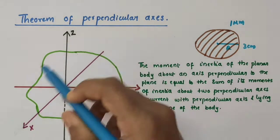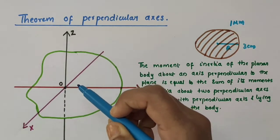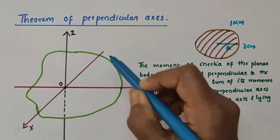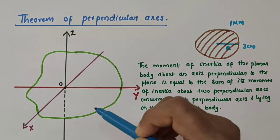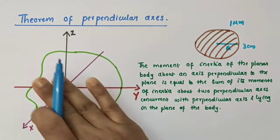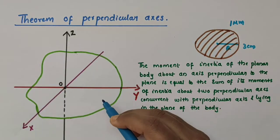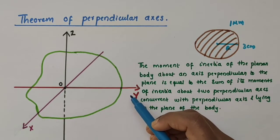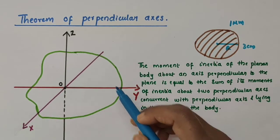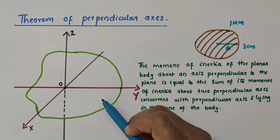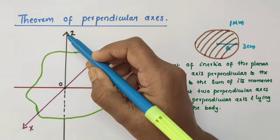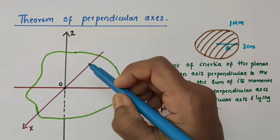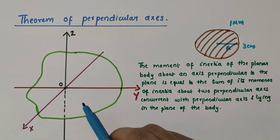Now consider this figure. Here we have a planar body — this green colored one. You just imagine this as a planar body; this is the plane of the body. Here X and Y are two perpendicular axes lying in the plane of the body. And here we have the Z axis which is perpendicular to the plane, that is perpendicular to both the X and Y axes.